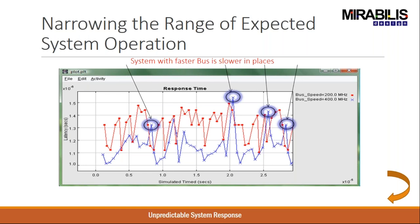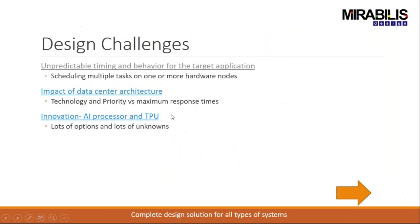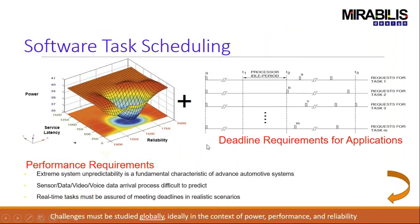Another design challenge is the impact of data center architecture. Software task scheduling is critically important for reliability. In certain applications, there is a deadline by which a task must complete — for example, in autonomous driving, the moment you press the brake pedal, the vehicle must stop within a few milliseconds. Missing that deadline results in a collision, so maintaining deadline requirements is essential.